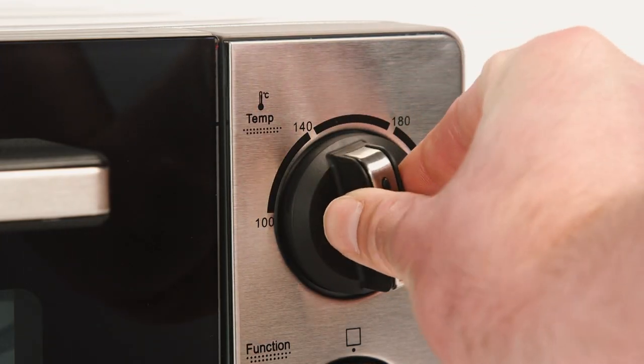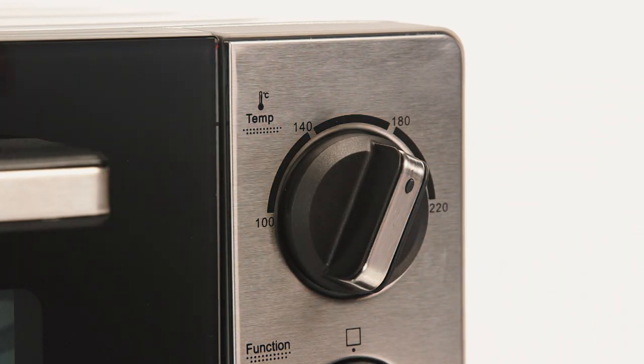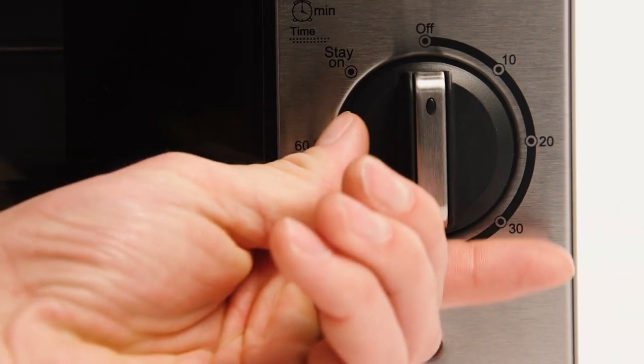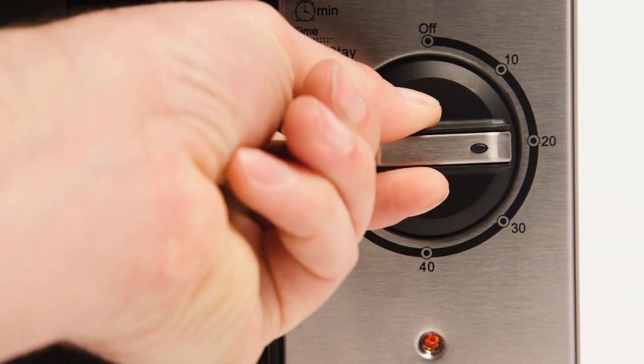Use the temperature control knob to select your desired cooking temperature. Then, turn the function dial to select your cooking method. You can then set the timer to the desired length of time needed.